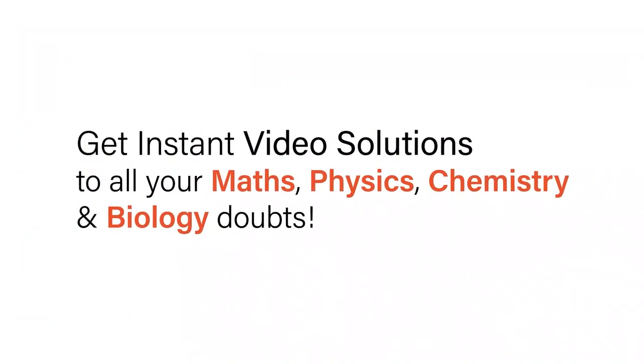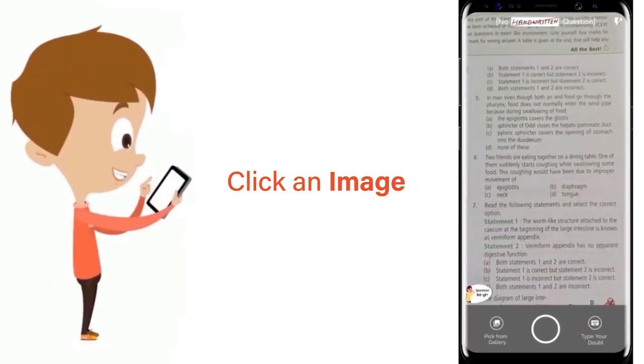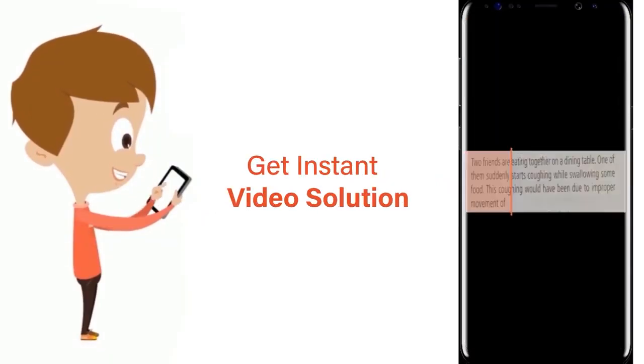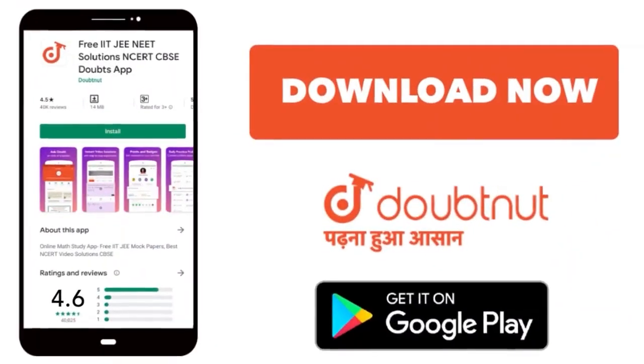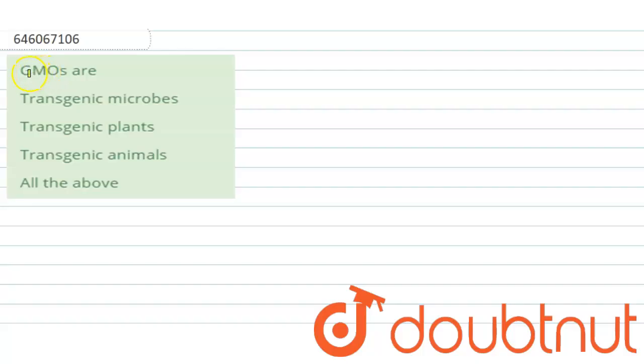With Doubtnut, get instant video solutions to all your maths, physics, chemistry and biology doubts. Just click the image of the question, crop the question and get instant video solution. Download Doubtnut app today. So the question here is: GMOs are. We have four options here.